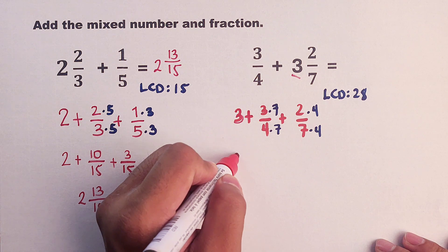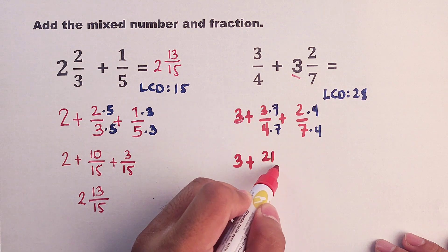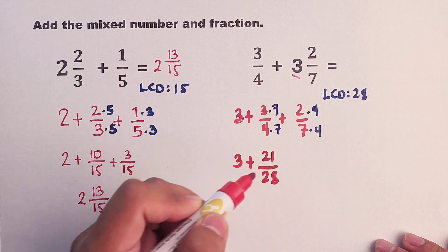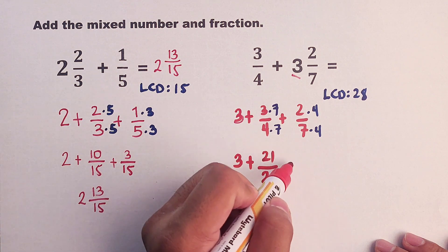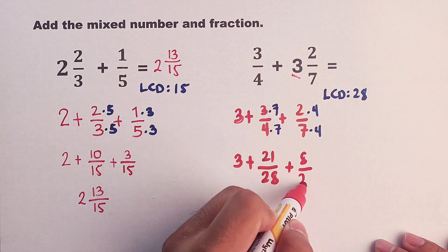Copy the whole number, 3. And this will become 21 over 28. Plus, 2 times 4 which is equal to 8 over 28.